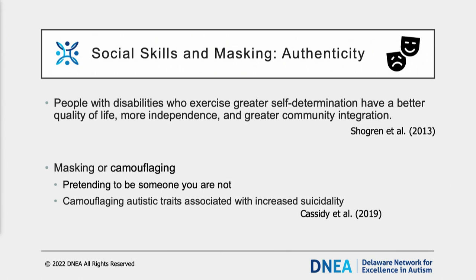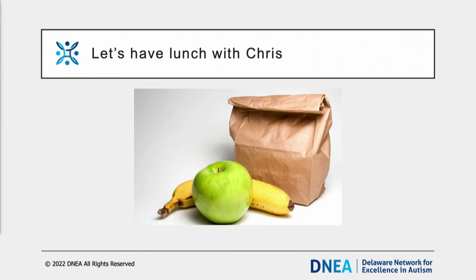Research suggests that camouflaging autistic traits is associated with increased risk of lifetime suicidality. After the parent-teacher conference, Ms. Fink realizes she misread Chris regarding his interest in having friends. She reaches out to invite him to have lunch in her classroom, and as she forms a relationship with Chris, she learns about his strengths and his goal to become a mechanical engineer. She asks Chris if he's ever considered joining the robotics club. Chris shared that he thought about it but wasn't sure how to join or what it would be like. She talks with Chris more and obtains his consent for further investigation of this opportunity.